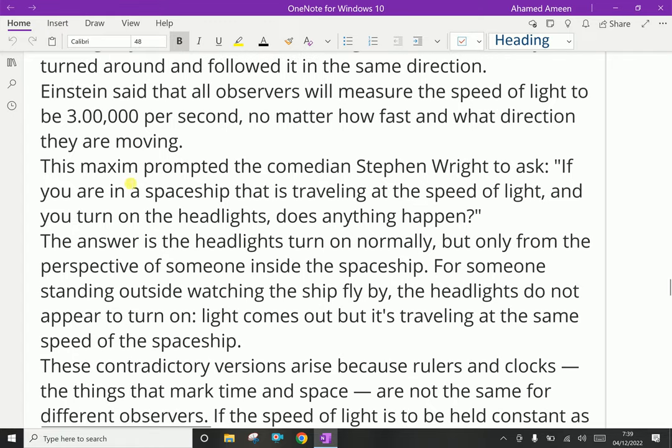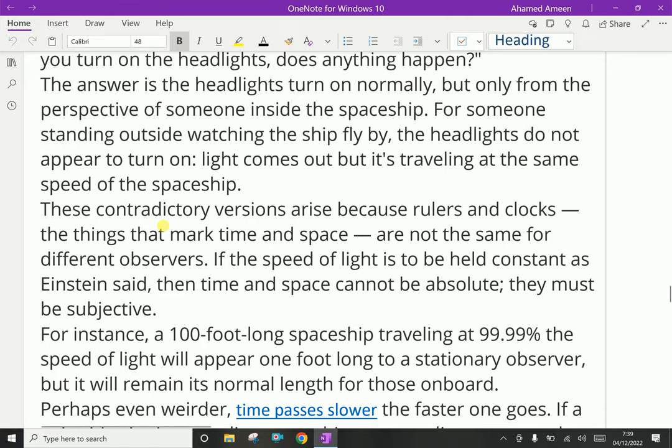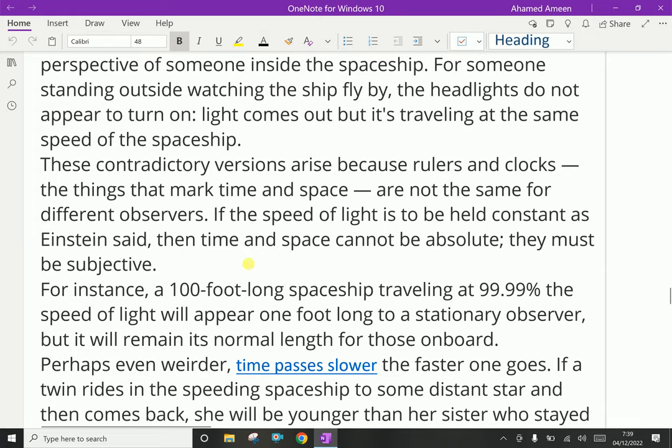These contradictory versions arise because rulers and clocks, the things that mark time and space, are not the same for different observers. If the speed of light is to be held constant, as Einstein said, then time and space cannot be absolute, they must be subjective. Time and space is not constant. The time is not constant everywhere, but it seems to be constant on Earth because our speed is very less compared to the speed of light.